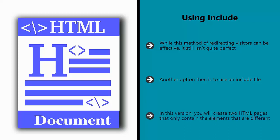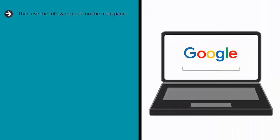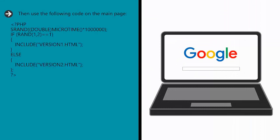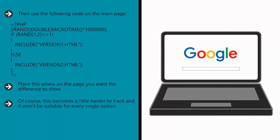This basically means that the page will populate itself with content from another page, allowing a blank template to become your new version of the page. In this version, you will create two HTML pages that only contain the elements that are different. This works particularly well if you are changing something about the text, for instance. Save these as version1.htm and version2.html, then use the following code on the main page and place this where on your page you want the difference to show. Of course, this becomes a little harder to track and it won't be suitable for every single option, but you can always create two full page include files and have them load instead.